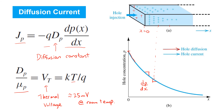The gradient at this point — the slope of the hole concentration — is negative because the concentration is declining. This gives rise to a net movement of positive charge from left to right through the semiconductor, which is a positive current on the x-axis. Therefore, we have a negative sign in the expression: a negative gradient gives rise to a positive current density, and vice versa.